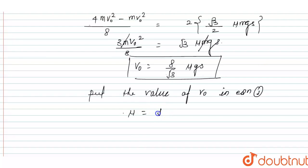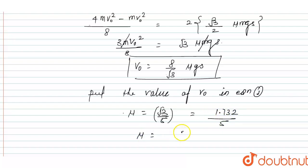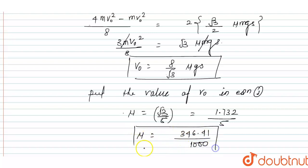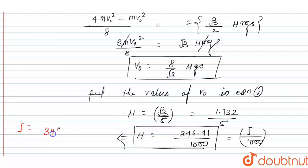Solving, we get μ = √3/5 = 1.732/5 ≈ 346.41/1000. Since the question states μ = i/1000, the value of i = 346.41, and the nearest integer is i = 346. This is the correct answer to the question.